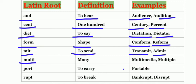The next one is multi which means many, for example, multimedia, multiple. Next one is port which means to carry, for example, portable, airport. Next one is rupt which means to break, for example, bankrupt, disrupt.